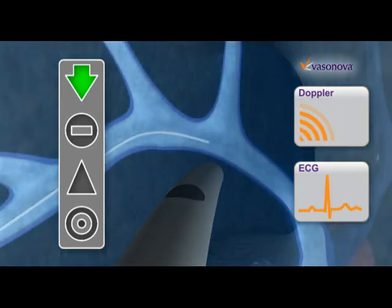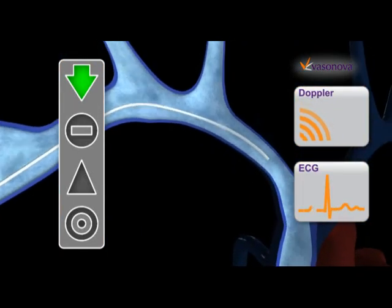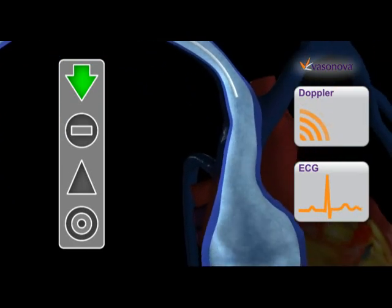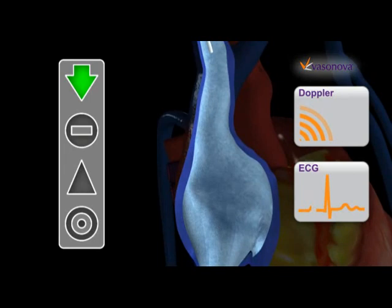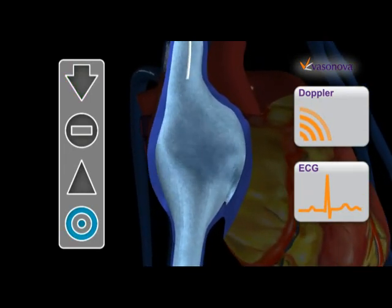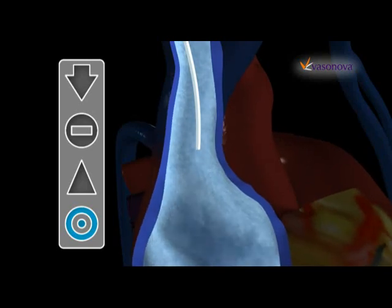Since a single physiological parameter might be impaired in certain patients, the Vasonova VPS is not dependent on just one parameter, such as ECG, to determine the location of the catheter tip. Instead, the Vasonova VPS uses multiple characteristics from multiple parameters to determine the location of the catheter tip.